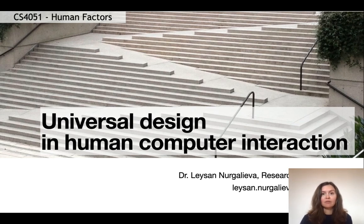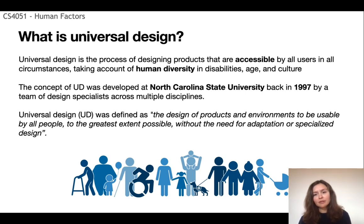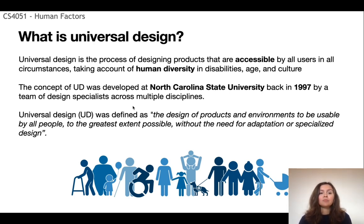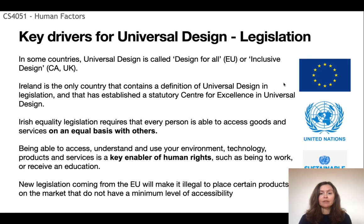Some products are hard to interact with — for example, if you have limited strength or dexterity. Universal Design addresses those issues. It is essentially a process of designing products that are accessible by all users in all circumstances, taking into account human diversity, abilities and disabilities, but also factors like age and culture. This concept was developed at North Carolina State University back in 1997 by a multidisciplinary team of designers, who defined it as the design of products and environments to be usable by all people to the greatest extent possible without the need for adaptation or specialized design. Universal Design can also be called design for all or inclusive design, but the concept is the same.